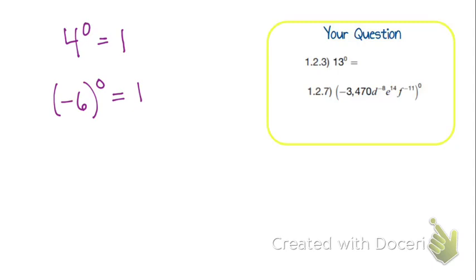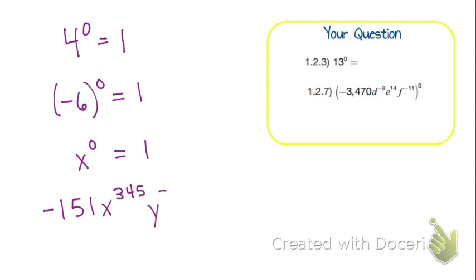If I had x to the zero power, the answer would be 1. If I had negative 151 x to the 345 y to the negative 23, all of that to the zero power, the answer would be 1.